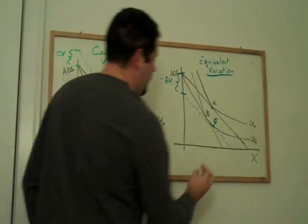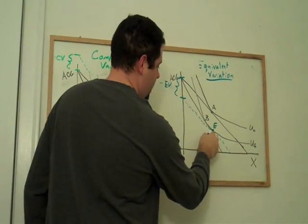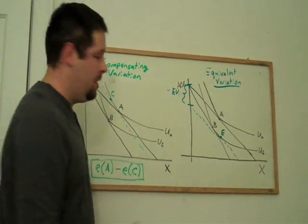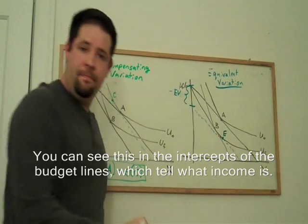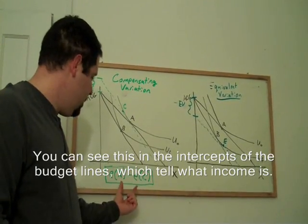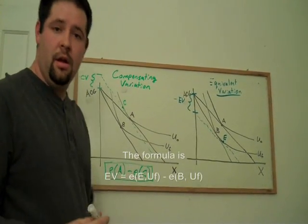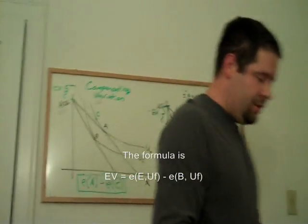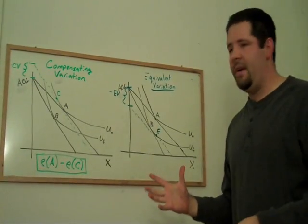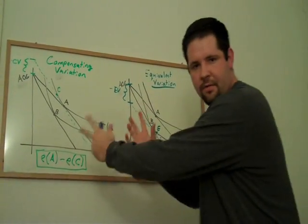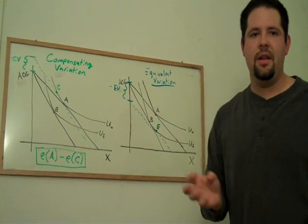Another thing to notice is that E costs less than B. So we get a similar formula as to right here. So those are two measures of welfare change, both of them on an indifference curve and budget constraint diagram.